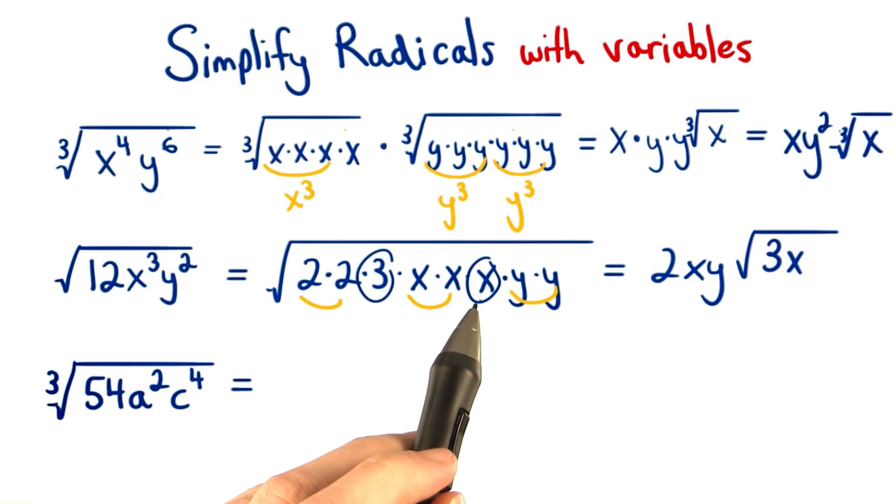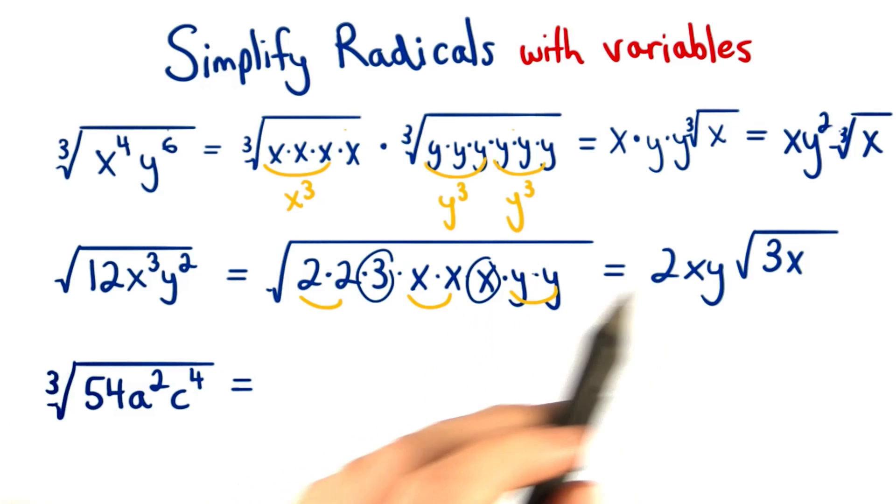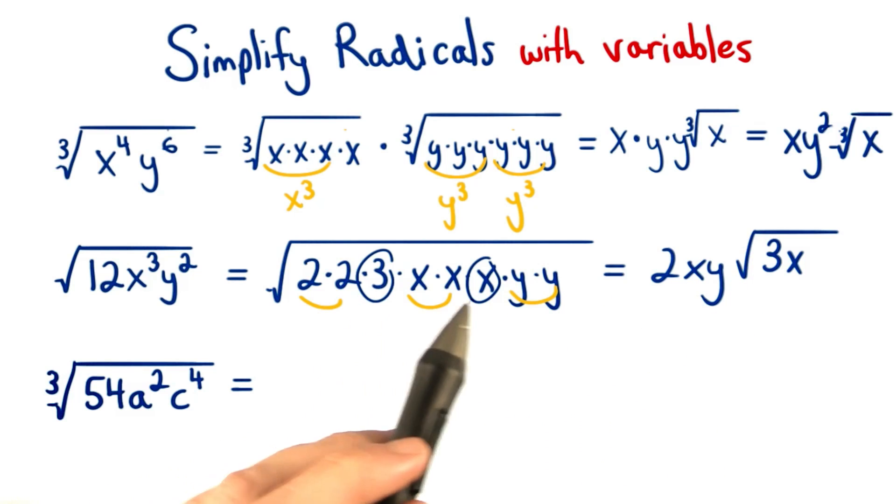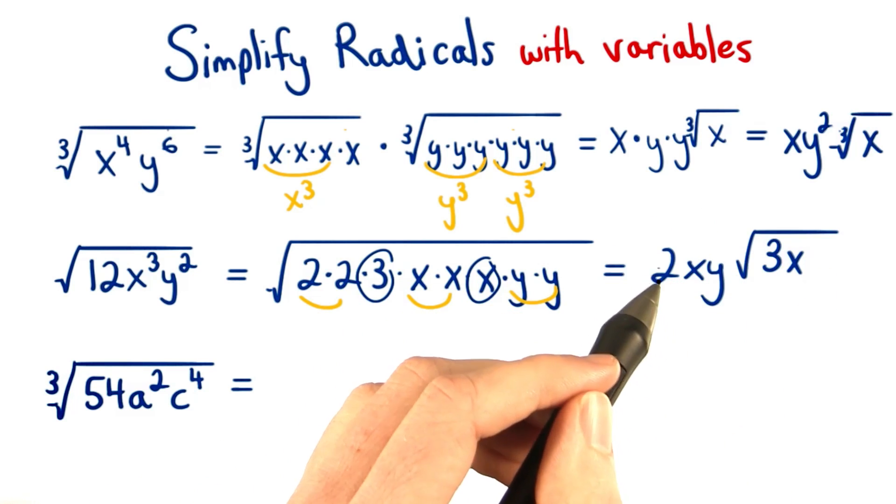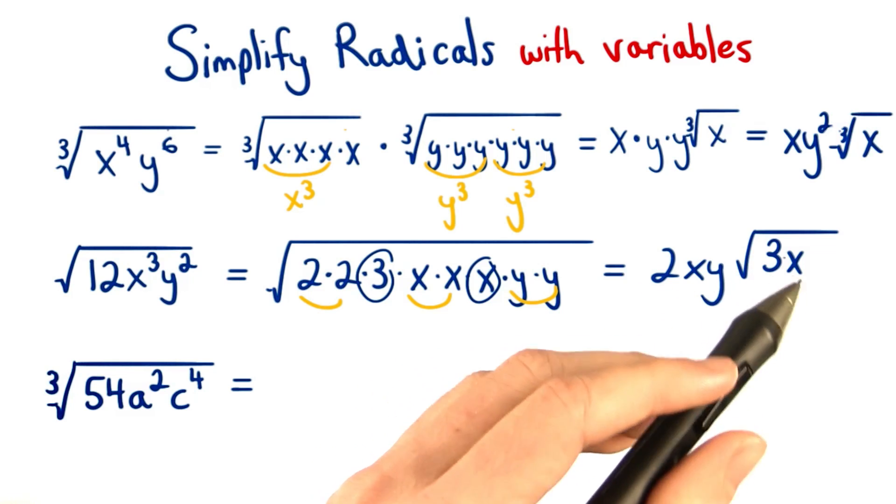This 3 and this x are factors that need to stay underneath the square root symbol because they're not paired. This leaves us with our final answer, 2xy times the square root of 3x.